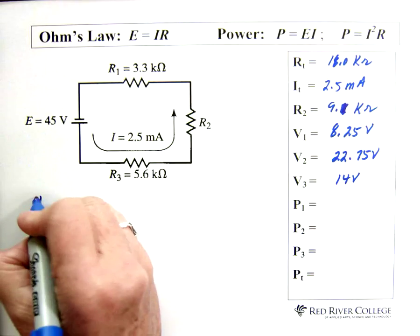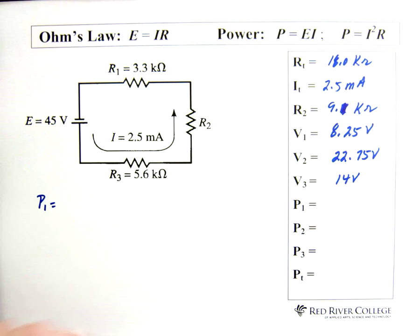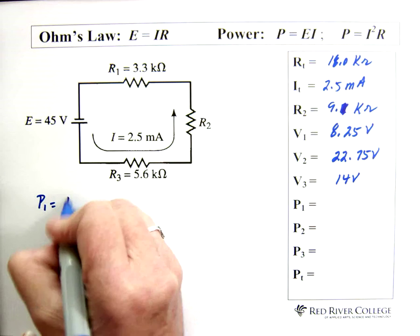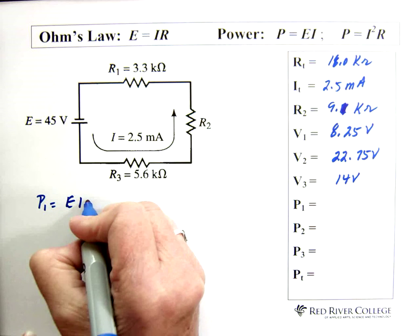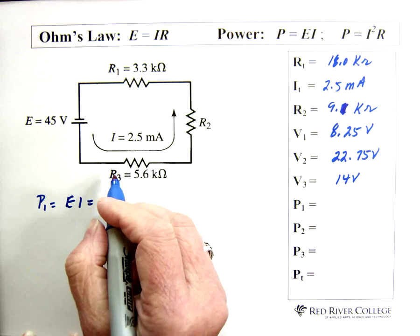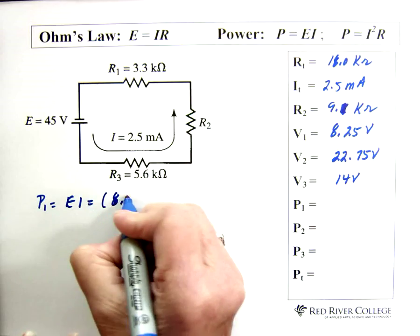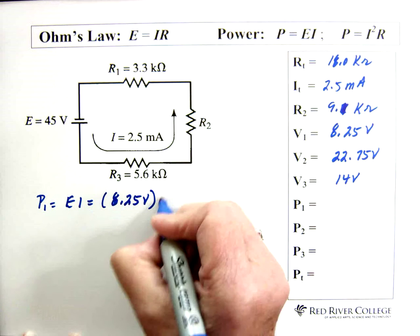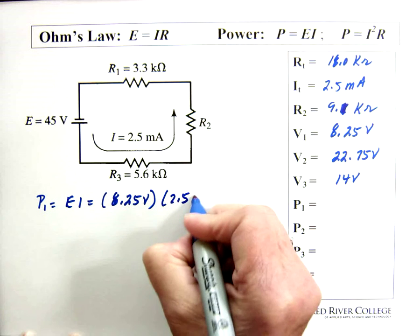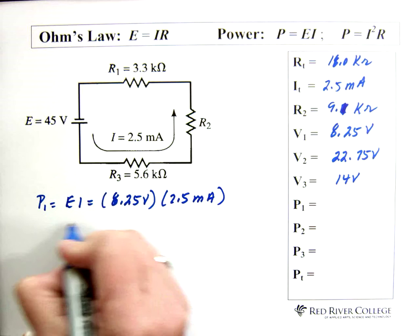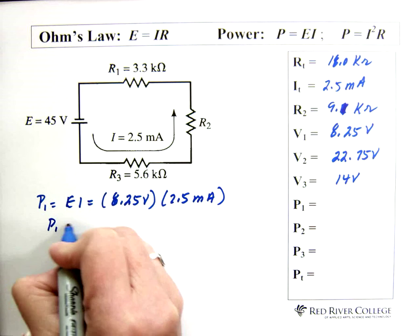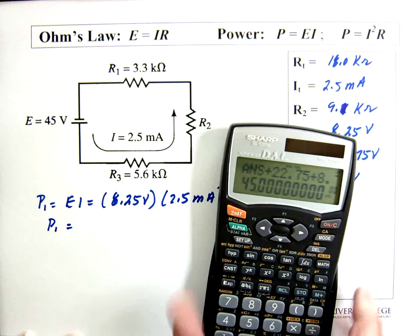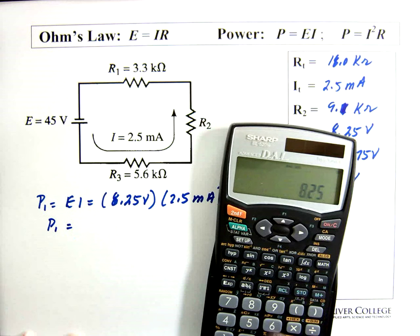EI is simple. So let's go with that for this one. EI voltage for 1 is 8.25 volts. And the current is 2.5 milliamps.